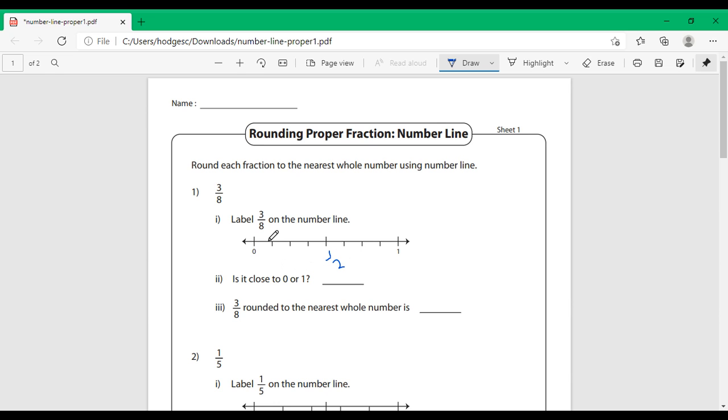We have it separated into 8 segments: 1 eighth, 2 eighths, 3 eighths, 4 eighths, 5 eighths, 6 eighths, 7 eighths, and 8 eighths, which is equal to a whole. If you place the 3 eighths on the number line, you have 1, 2, 3.